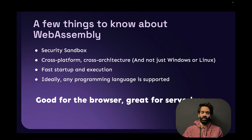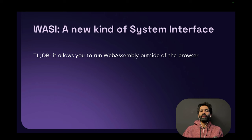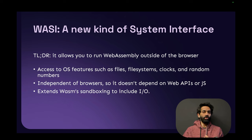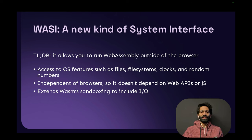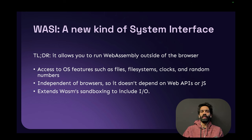For anything to run on a server, you need access to things like files, clocks, system interfaces, random number generators, and so on. This didn't exist up until 2018-19 when something called WASI was introduced — the WebAssembly Systems Interface — which essentially allows you to run WebAssembly outside a browser. It gives you access to files, file systems, clocks, and random numbers completely independent of a browser. It extends WASM's security sandbox to include input/output, so for a WASM file to work with another file, you have to explicitly give it permissions.